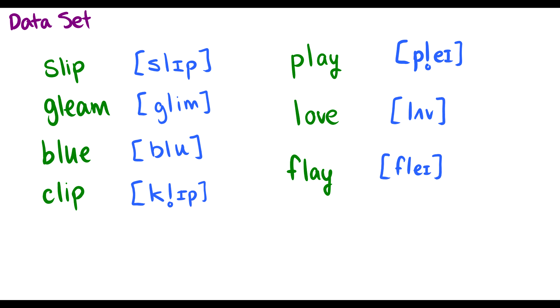It might be something to do with the vowels but the first thing I see are L's. Love, flay, play, slip, gleam, blue, clip. Okay let's take a look at the L's. Let's circle them so we know what we're looking at here. We see two distinctions here. We see this L with the circle under it. So this is not a syllabic L. This is a voiceless L.